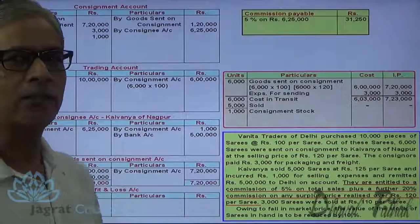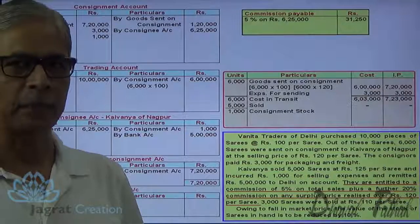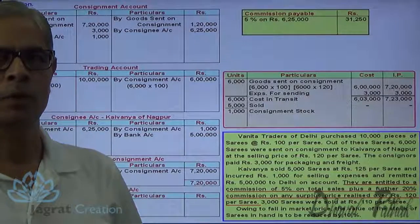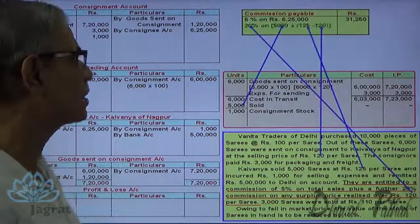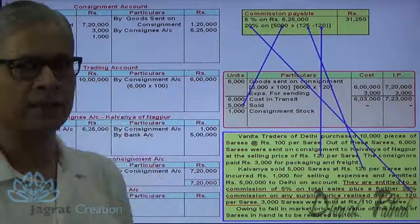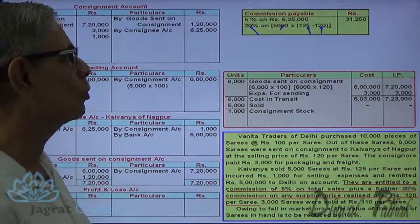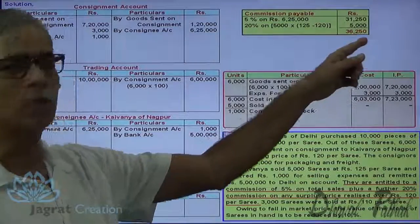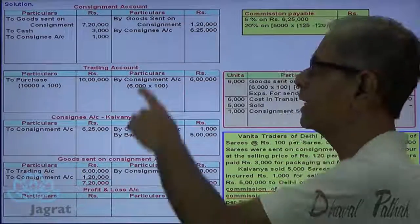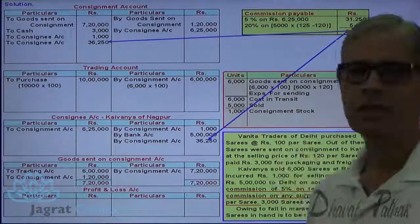Sales occurred at the rate of ₹125, and surplus realized over ₹120 is ₹5 per unit. 5,000 units were sold, so 5,000 into ₹5 equals ₹25,000 — this is the total surplus realized. ₹25,000 into 20% works out to ₹5,000 — this is the additional commission. Total commission: ₹31,250 plus ₹5,000 equals ₹36,250. This commission is an expense of consignment activity, so: consignment account debit to consignee account credit — ₹36,250.